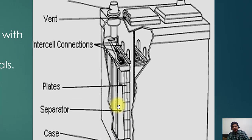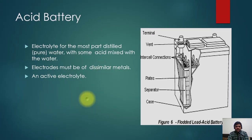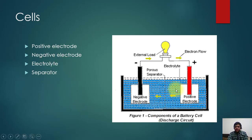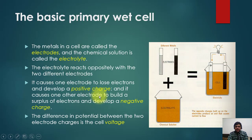This is an example of a lead-acid battery. Looking at the cell structure: this is the positive electrode, this is the negative electrode, and in between is the electrolyte. There is also a porous separator. This is the basic structure of a battery cell and the basic principle of a wet cell.